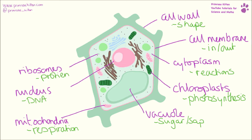Three things that are in a plant cell that aren't in an animal cell are going to be your cell wall, your chloroplasts, and your vacuole. That's a really, really common question that comes up.